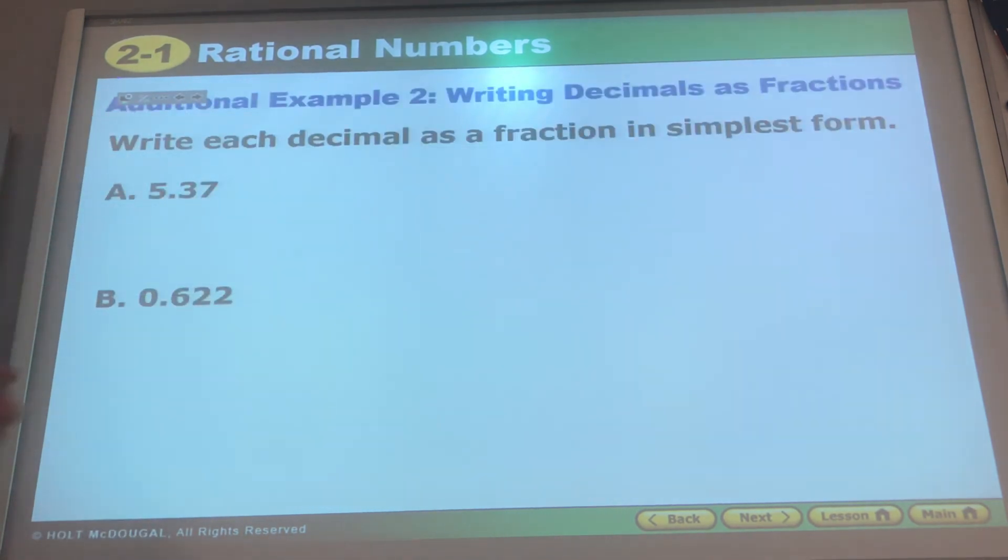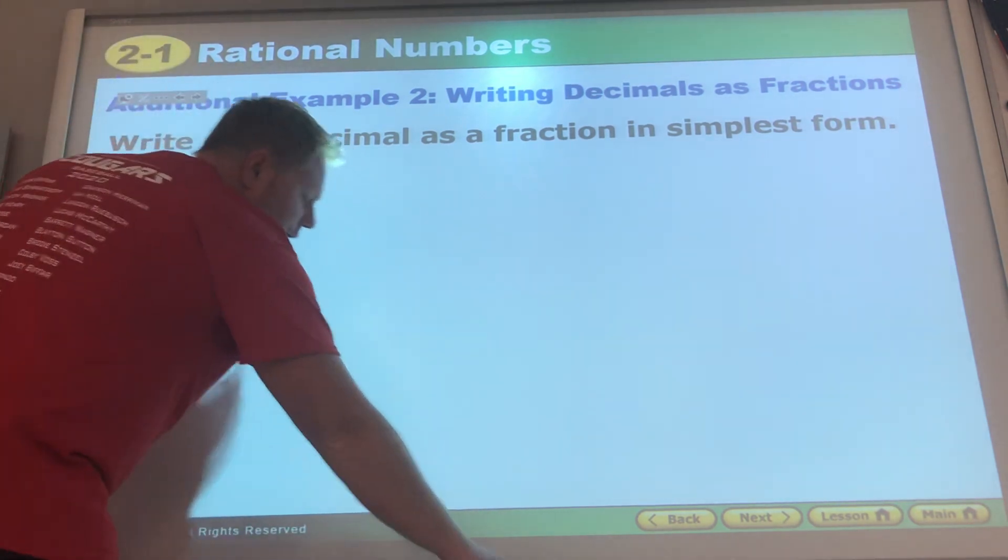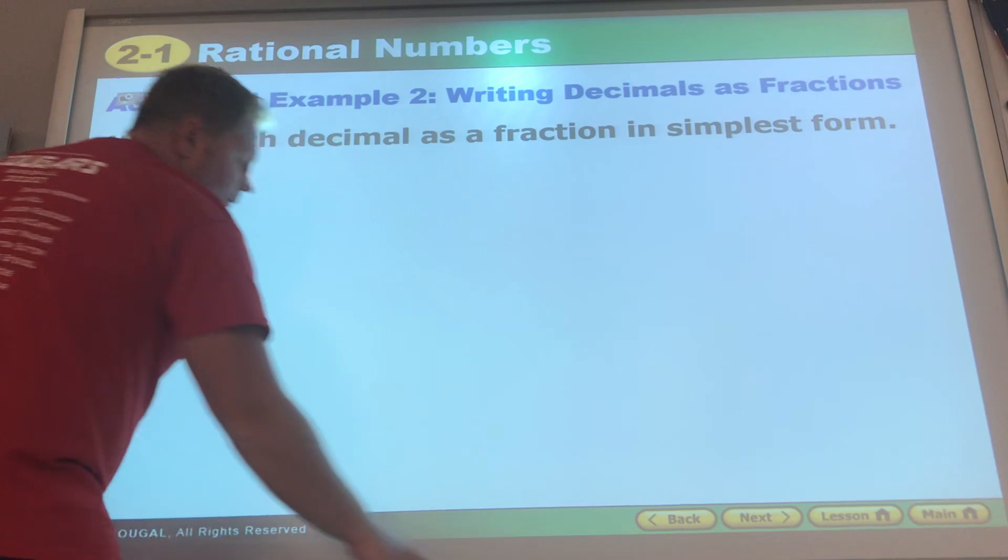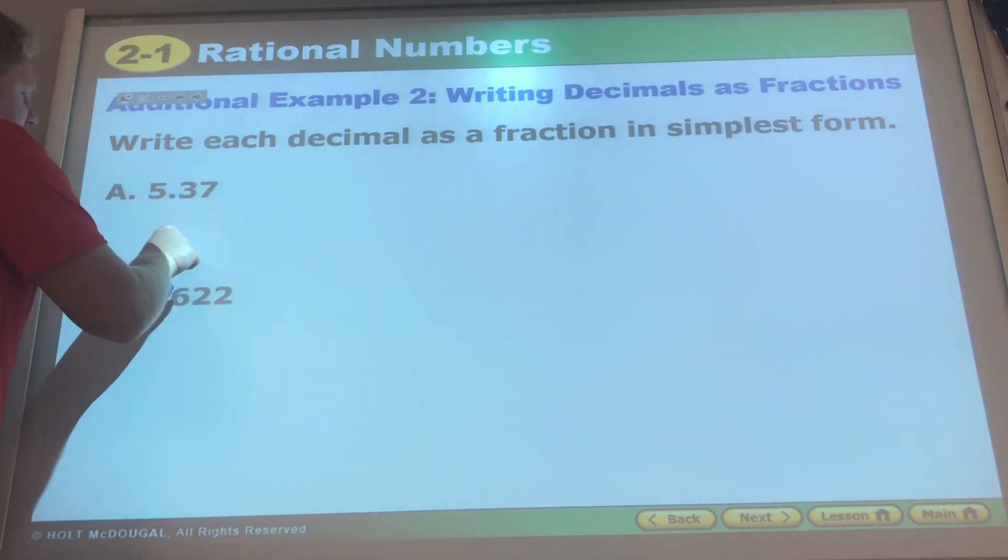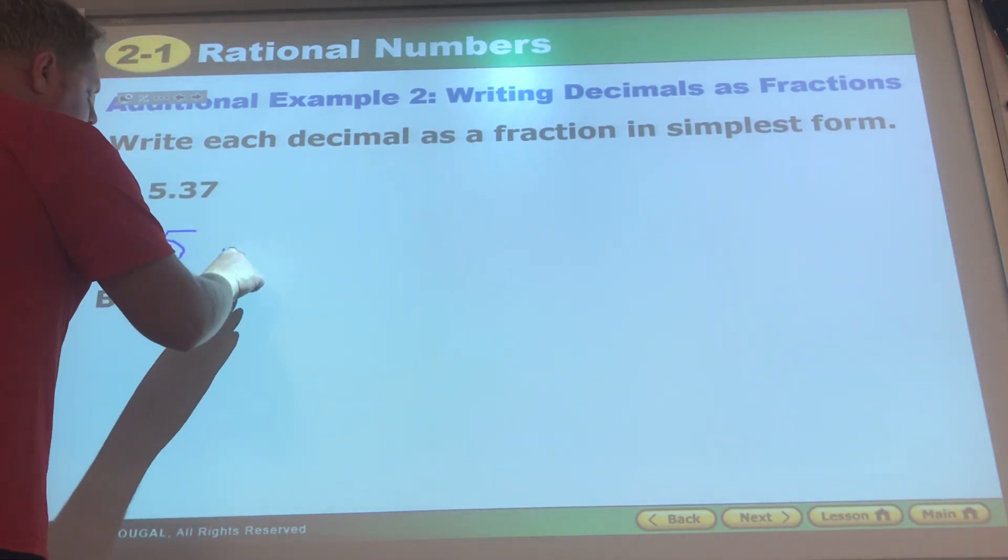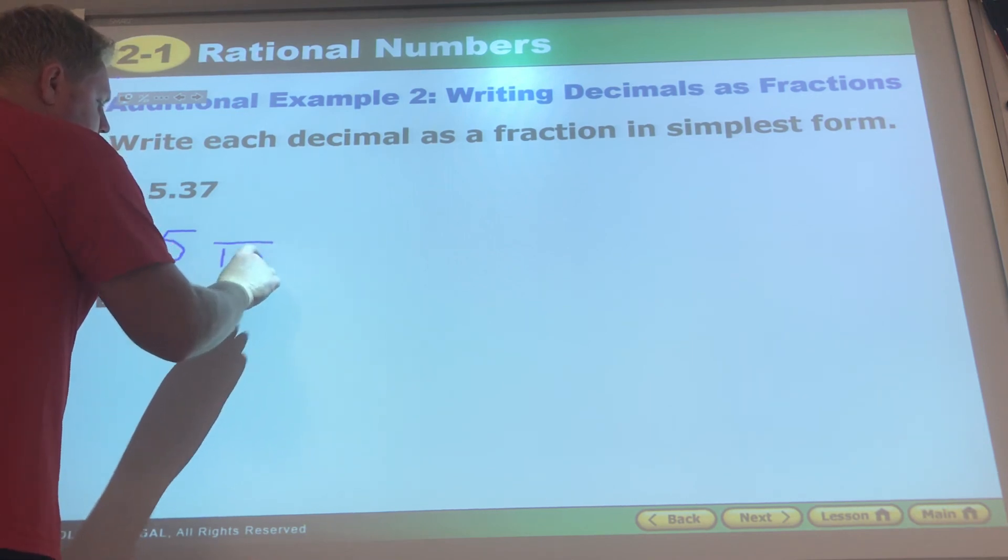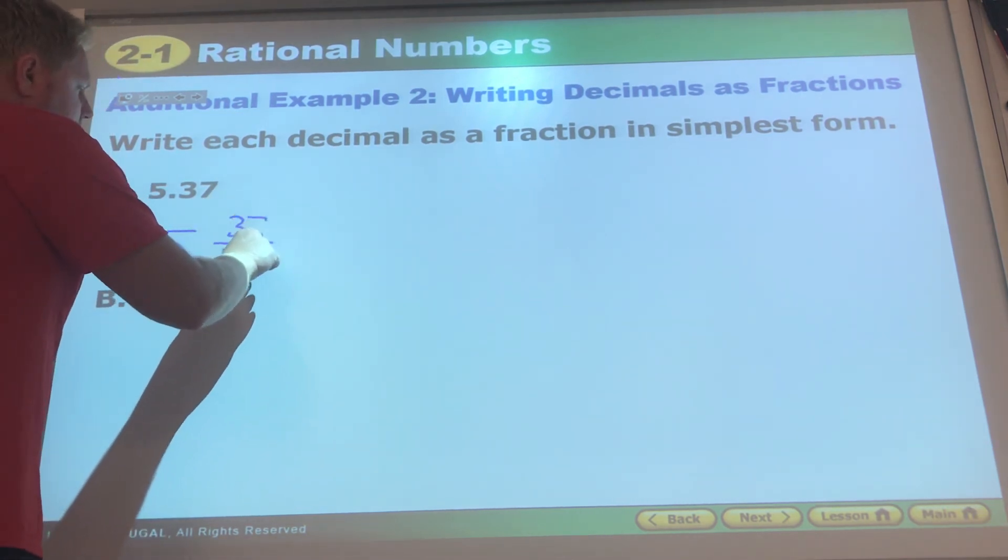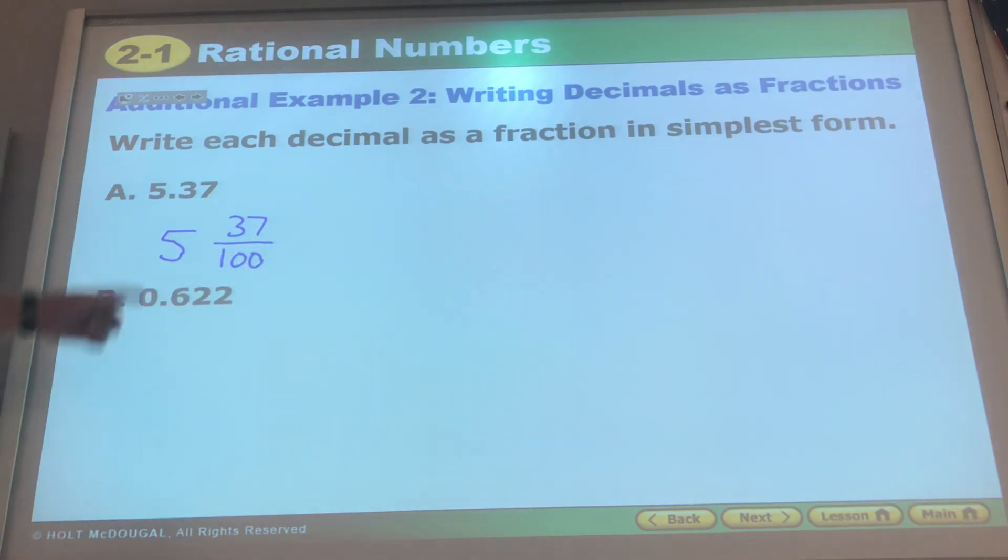Here, how do we write each decimal as a fraction? Well the stuff before the decimal we see that as a whole number, so that would be 5. Then the stuff behind the decimal, you should mathematically actually say it 37 hundredths because it ends in the hundreds place.